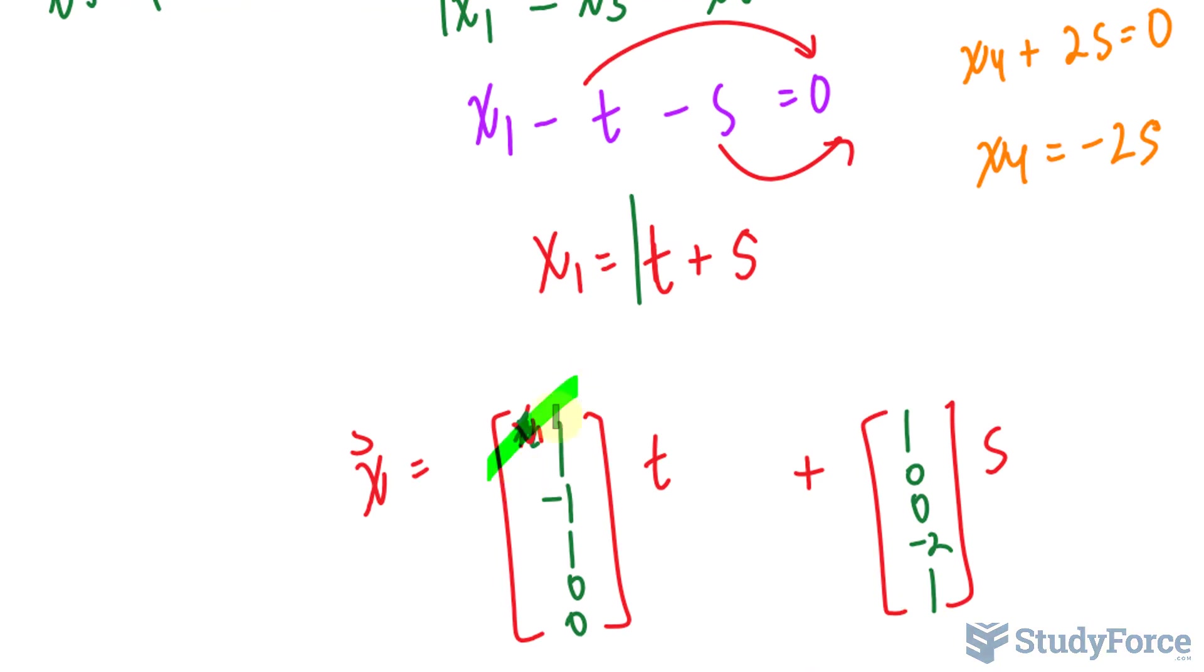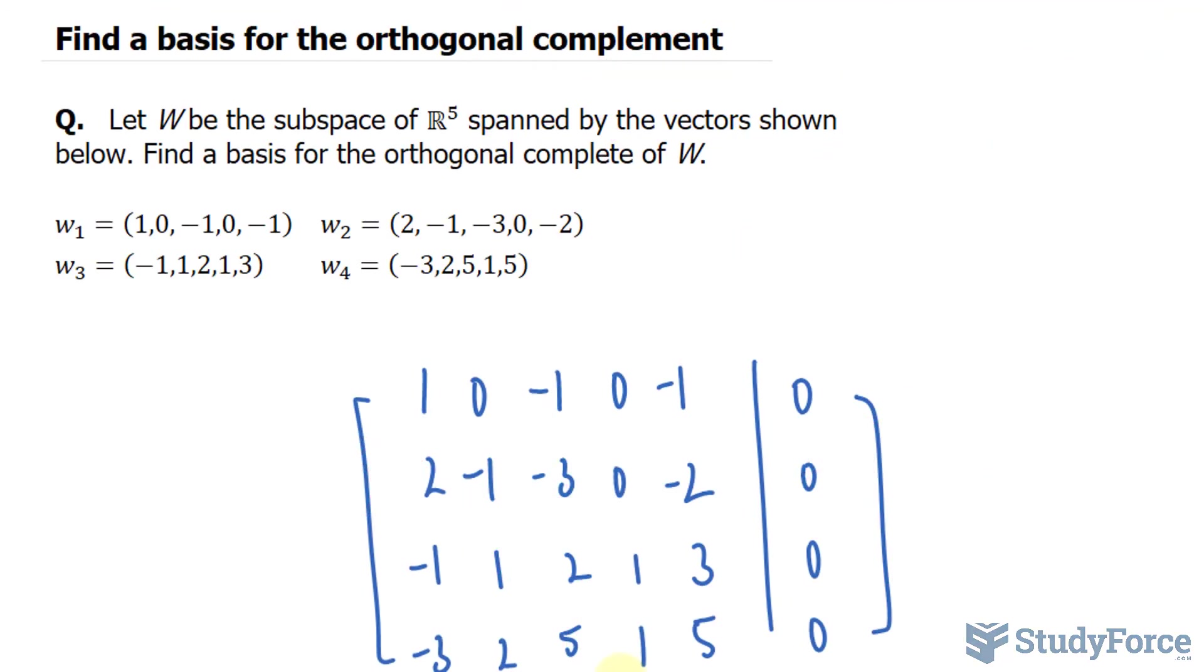So, these column vectors are the basis for w and that's it. That's how to find the basis for the orthogonal complement.